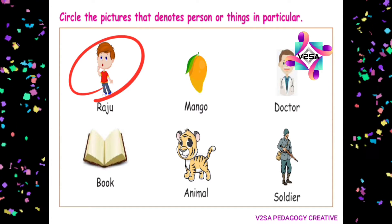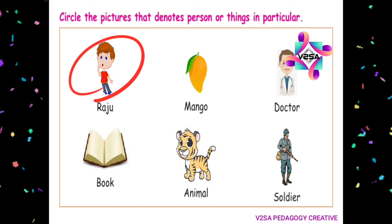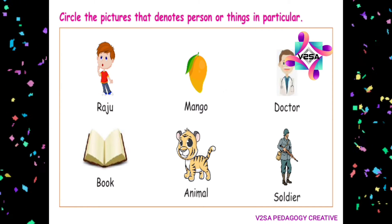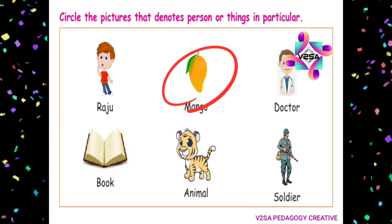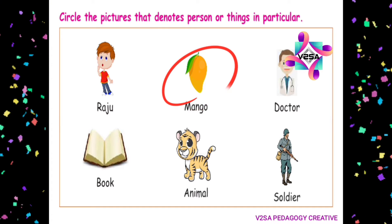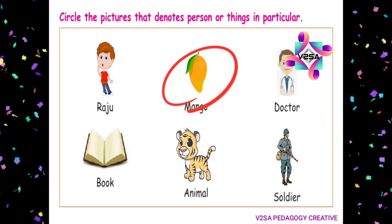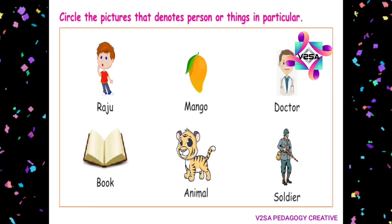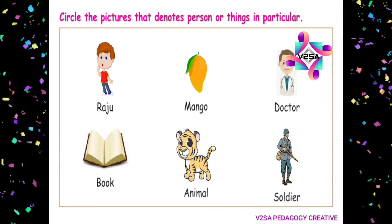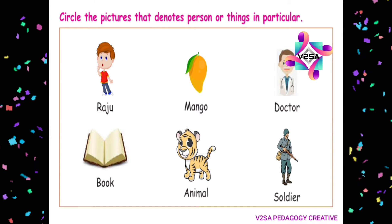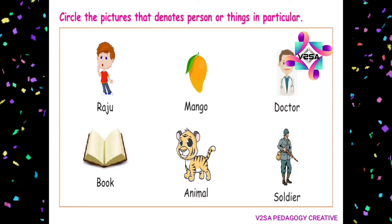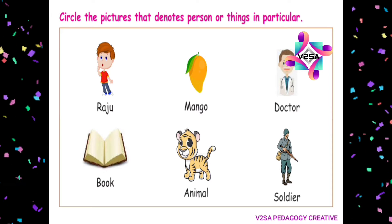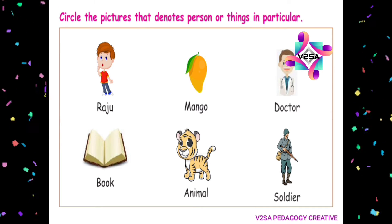Raju — Raju is a man's name. That is a proper noun. Mango — mango is a fruit, that is a common noun. Doctor, Animal, Soldier — these are common nouns.